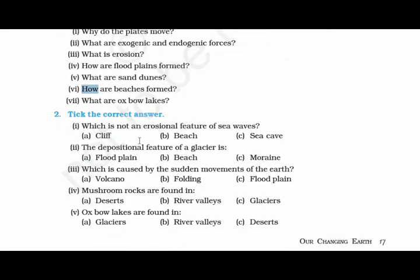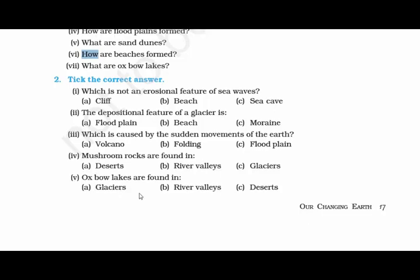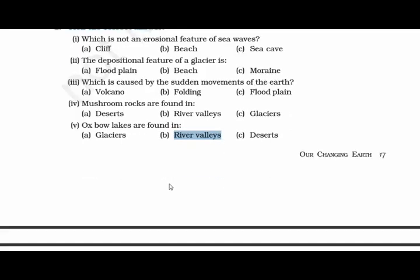Which is not an erosional feature of sea waves? Beach — sea waves take away the sand and bring it back, so beach is a depositional feature. Sea caves are made by sea waves. Cliff is not — it is a different thing altogether. The depositional feature of a glacier is moraine. Which is caused by sudden movements of the earth? Folding — when two lithospheric plates move, they form a fold. Floodplain is caused by running water. Volcano is an event that releases magma. Mushroom rocks are found in deserts — they are narrow at the base and wide at the top. Oxbow lakes are found in river valleys because they are formed by rivers, not deserts or glaciers.